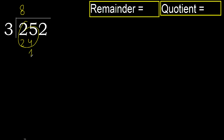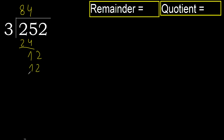Subtract. Next — 12. 3 multiplied by 4 is 12. 12 is not greater, so subtract. Remainder is 0, next.